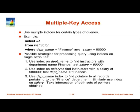The next topic is multiple key access. For example: find instructors in the finance department with salary 80,000. If I have an index on department name, I can fetch those instructors and check if salary is 80,000. If I have an index on salary, I can find instructors with salary 80,000 and check if department is finance. A third option: use both indices separately, find pointers for each condition, then take the intersection — similar to how web search engines intersect posting lists for multiple keywords.